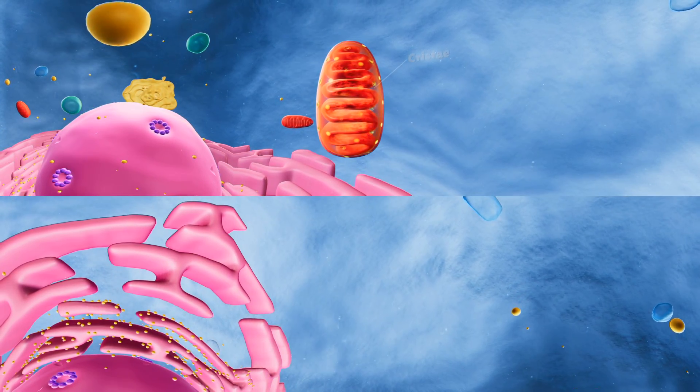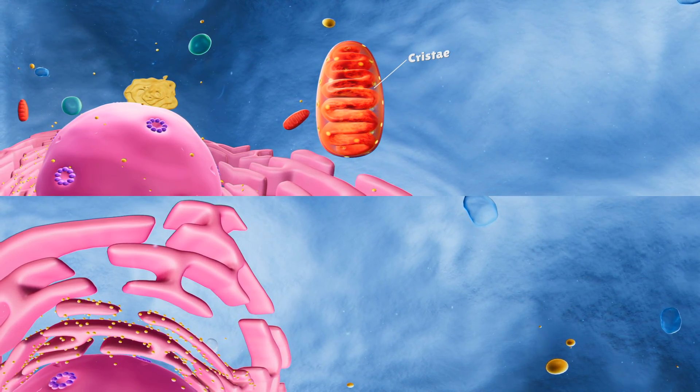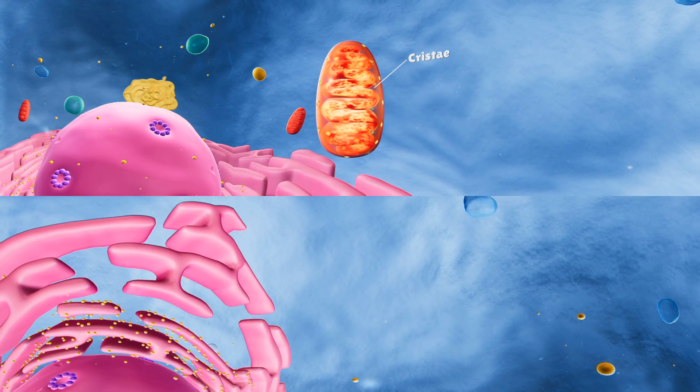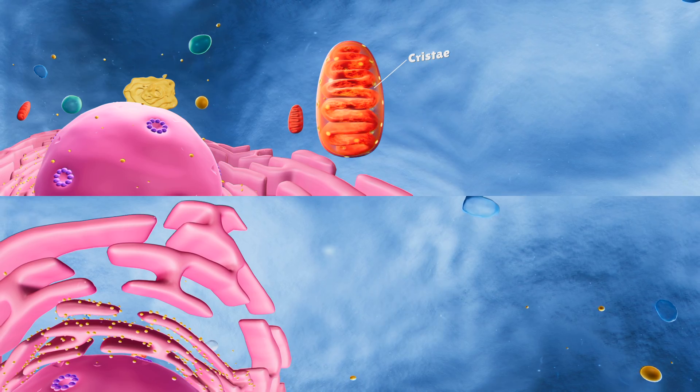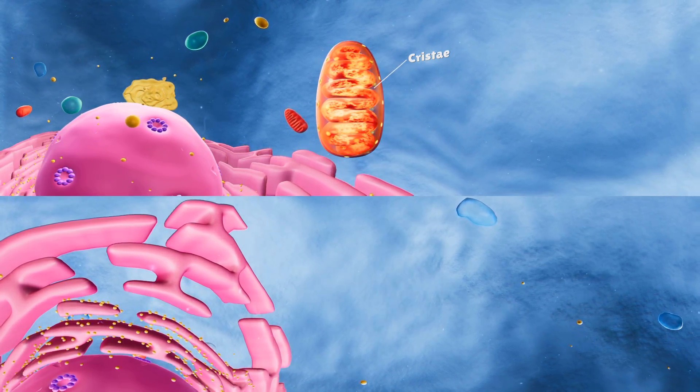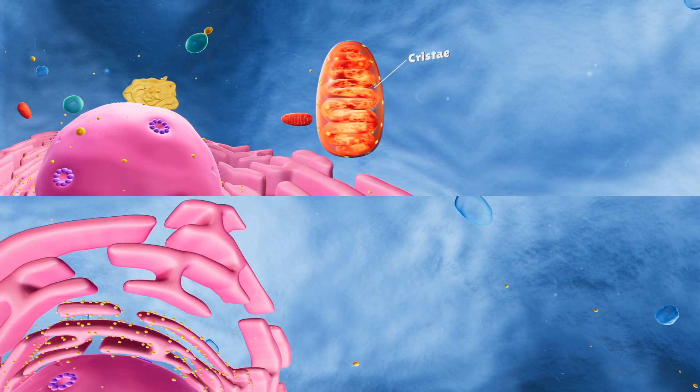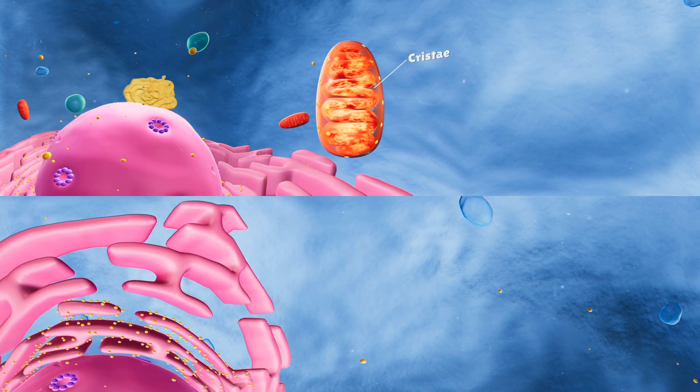Now we'll have a look at the most important part of the mitochondrion, the inner membrane. The inner membrane has many folds known as cristae, which provide the inner membrane with a large surface area. The inner membrane needs a very big surface area because it enhances its ability to generate ATP.